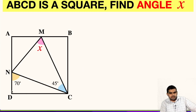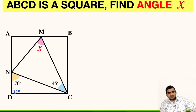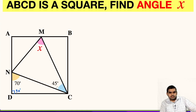First of all, we see that angle D will be 90 degrees. Now, focus on triangle NDC. In triangle NDC, the sum of all interior angles will be 180 degrees. So if one angle is 90 and the other is 70, the third one will be 20 degrees.